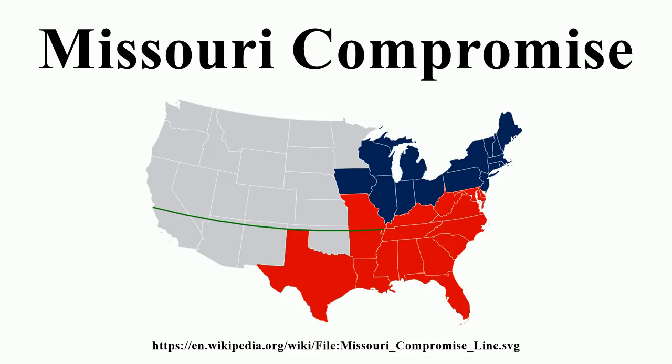The provisions of the Missouri Compromise forbidding slavery in the former Louisiana Territory north of the parallel 36 degrees 30 north were effectively repealed by Stephen A. Douglas's Kansas-Nebraska Act of 1854. The repeal of the Compromise caused outrage in the North and sparked the return to politics of Abraham Lincoln, who excoriated Douglas's act in his Peoria speech.